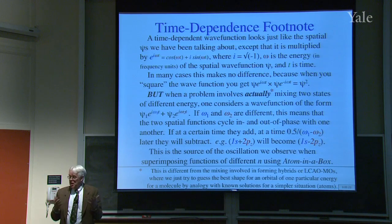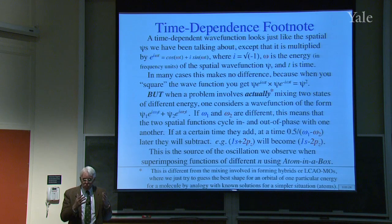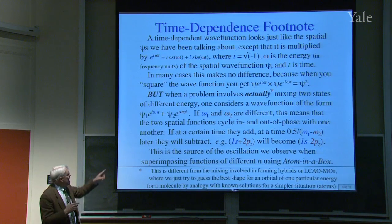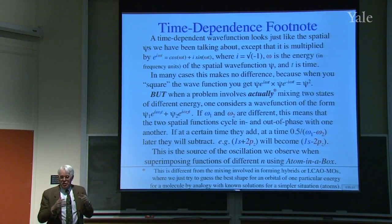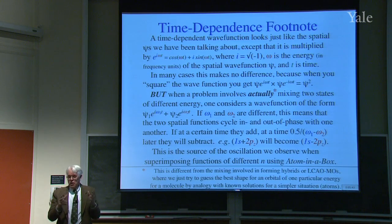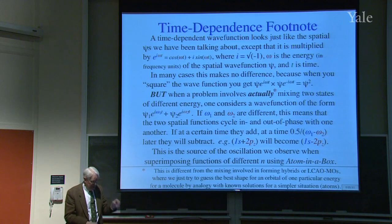We usually mix 2s with 2p, which have very similar energies, but in those cases we weren't mixing two real states — we were just getting a reasonable form for a wave function of some particular energy. When light is involved, you actually mix states of different energies. It's a different situation.